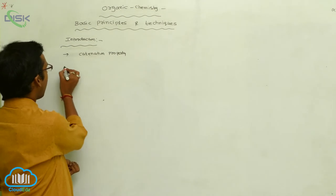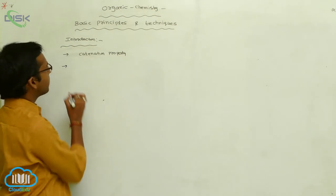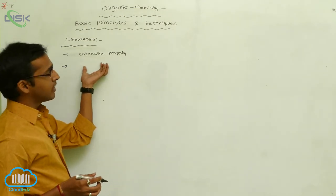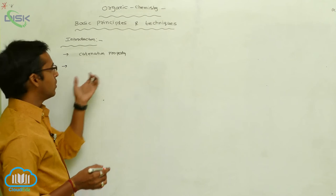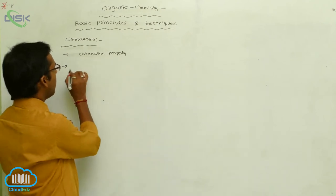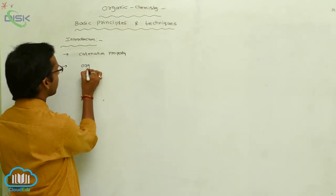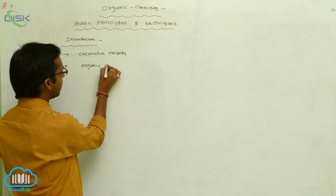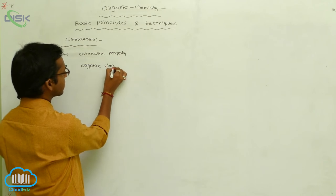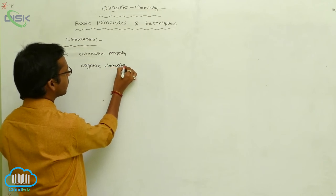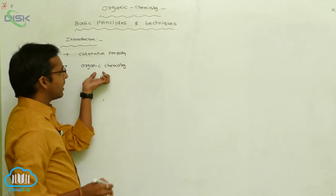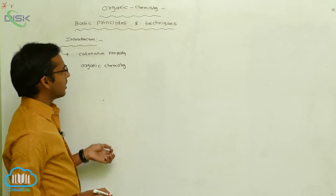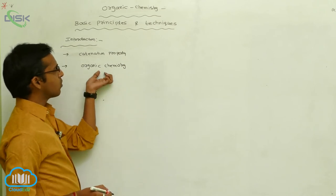Under a separate branch, we discuss carbon and its compounds. Such a branch is called organic chemistry. In organic chemistry, we discuss carbon compounds and their properties.